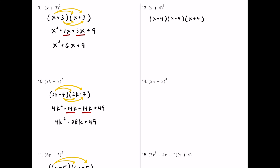Multiplying the first two: x times x is x squared, x times 4 is 4x, 4 times x is another 4x, and 4 times 4 is 16. Combining 4x and 4x gives 8x, so the first two binomials multiply to x squared plus 8x plus 16.